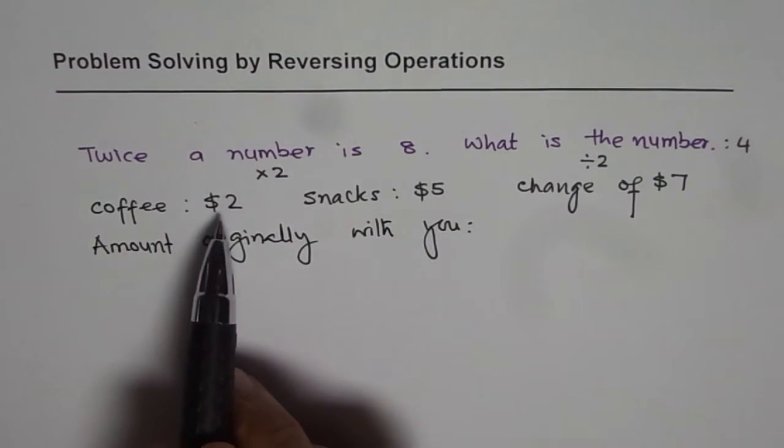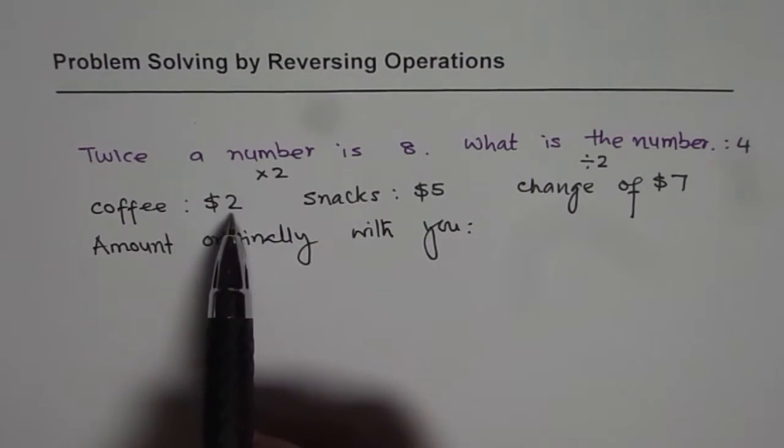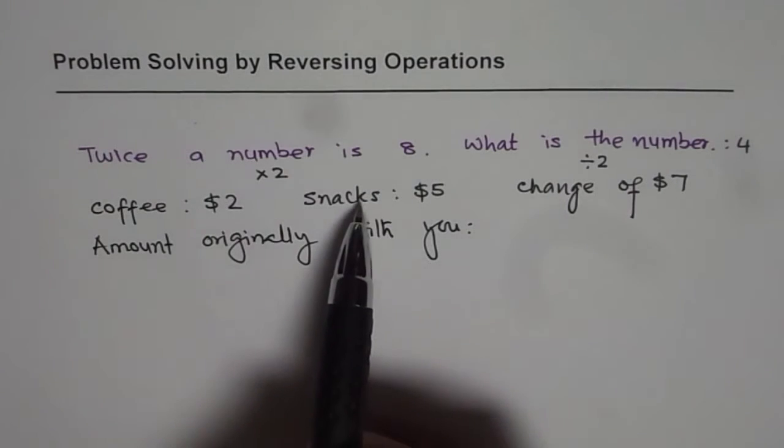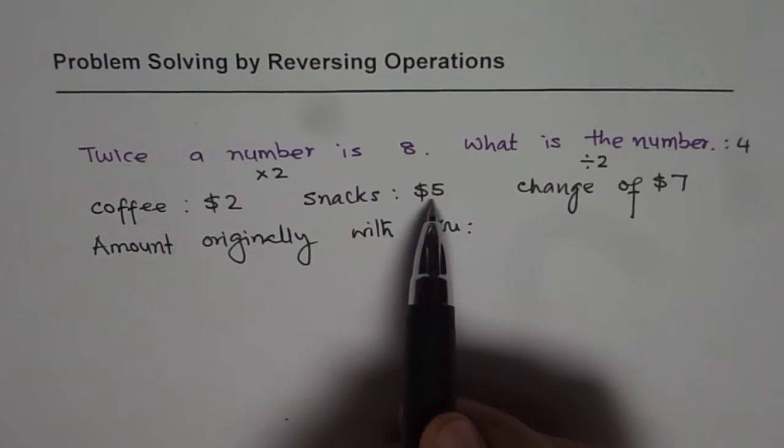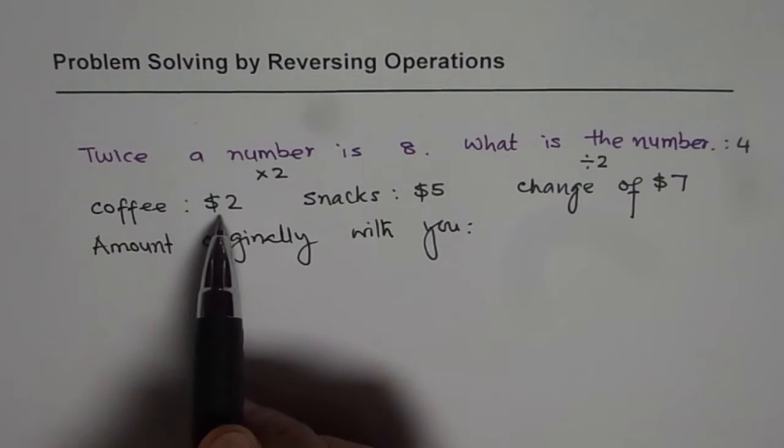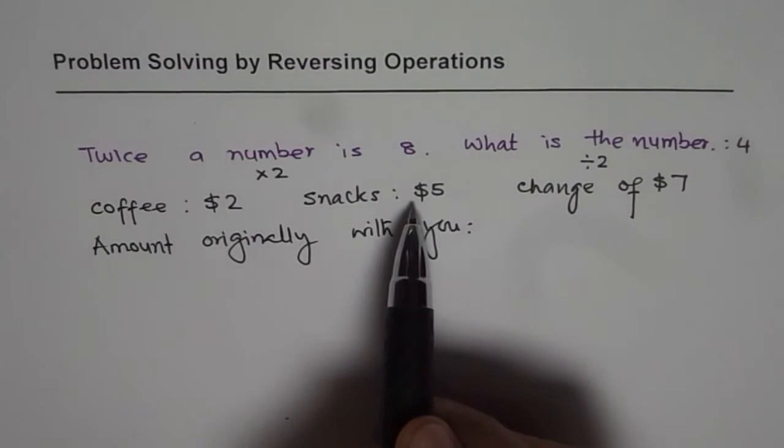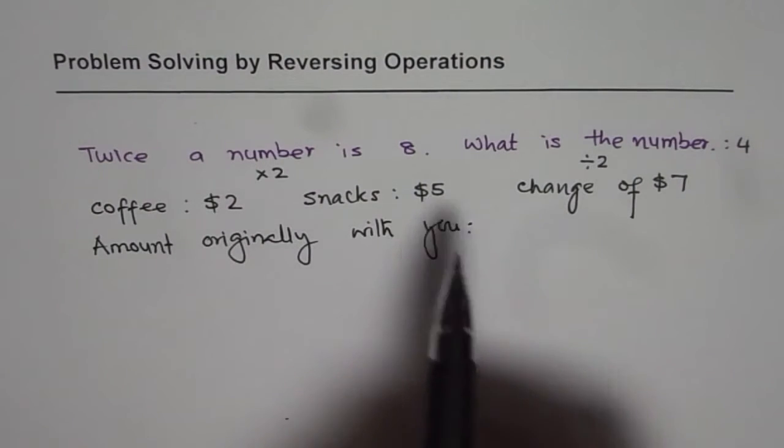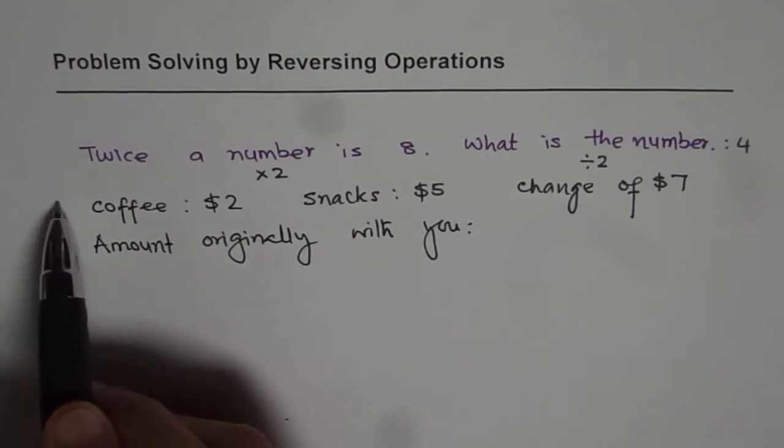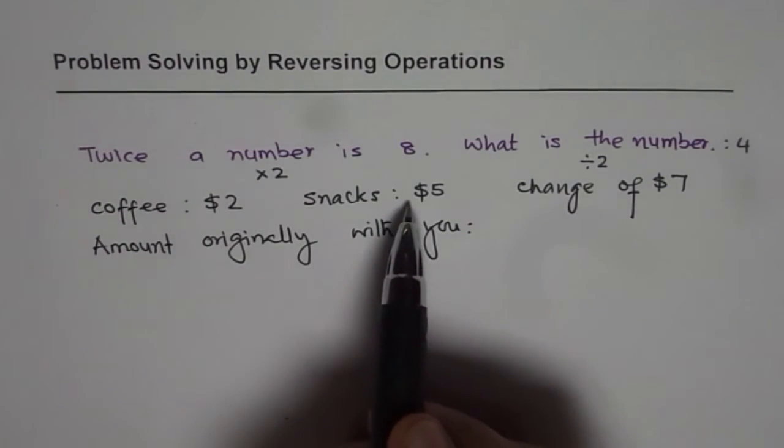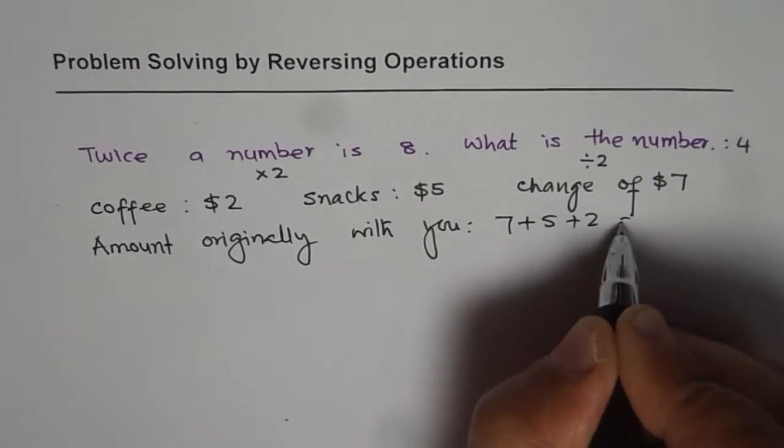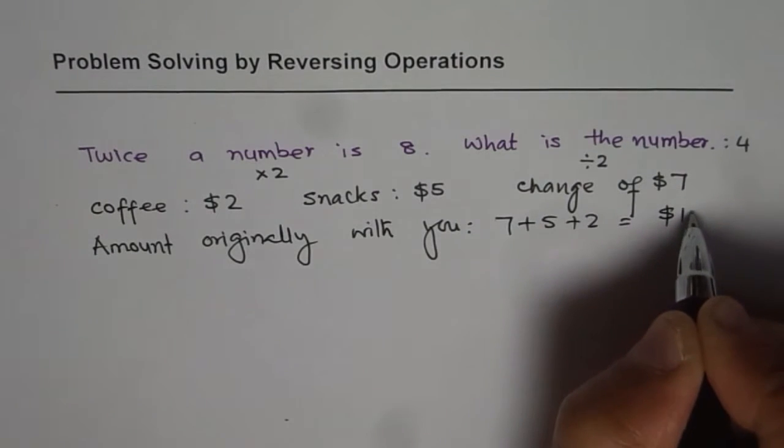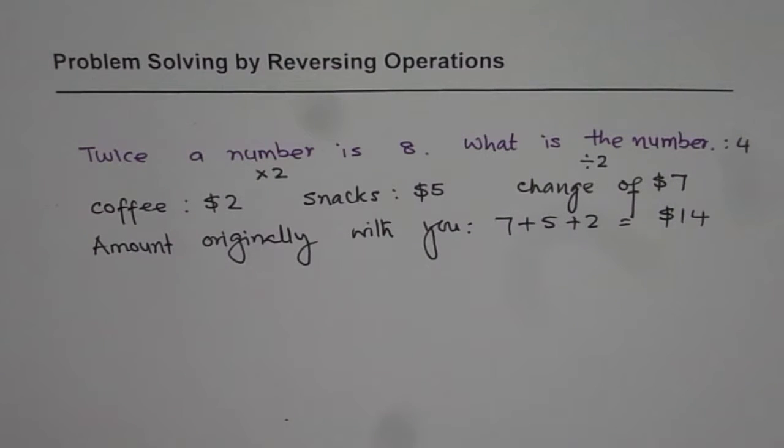You have spent 2 dollars on coffee, 5 dollars on snacks and you are left with a change of 7 dollars. That means you have 7 plus 5 plus 2. Because you gave away 2 dollars, you gave away 5 dollars, you are left with 7. What you had was, we will do reverse of this. We will add these amounts. 7 plus 5 plus 2 and we get 14. So, you started with 14 dollars.